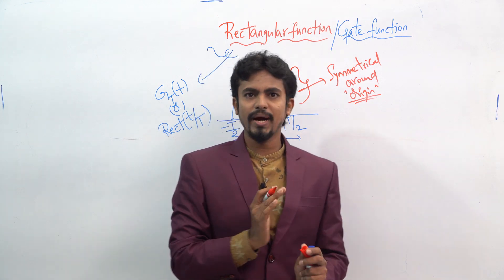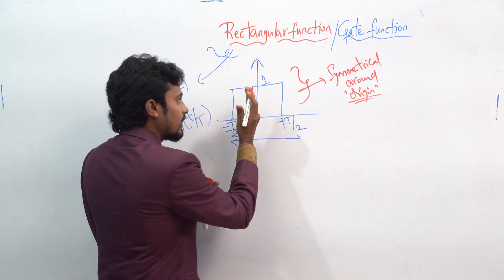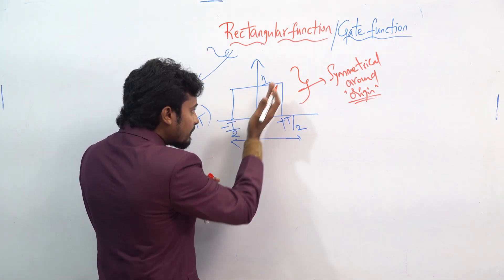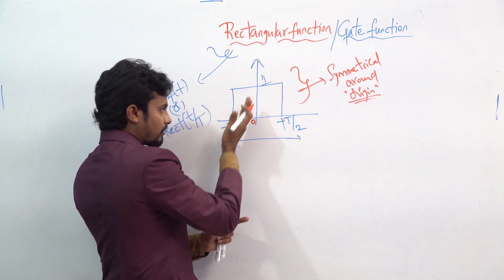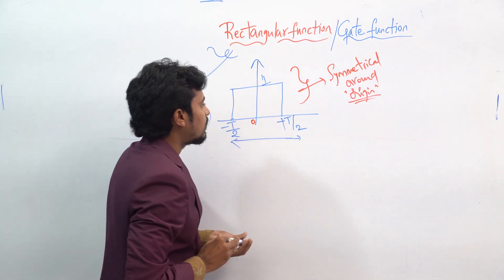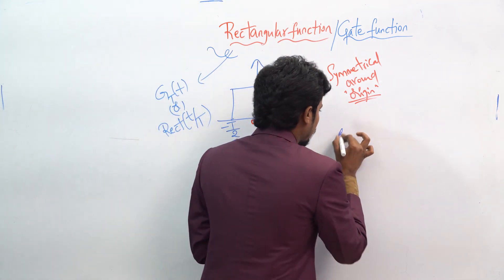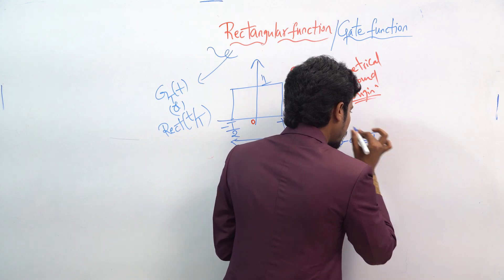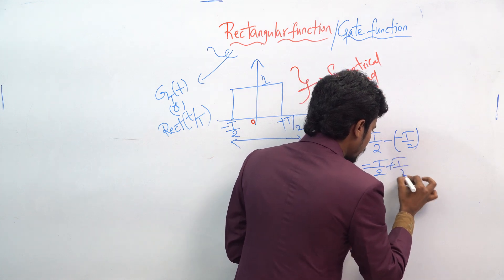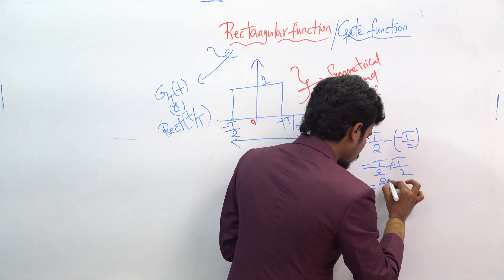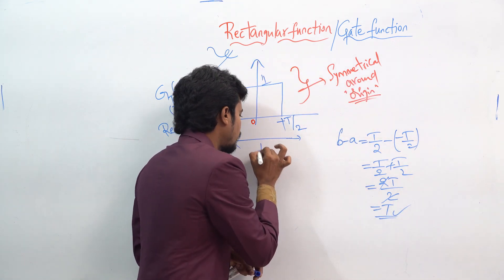That means the left-hand part is the same as the right-hand part. If you want to find the total width, that will be b minus a, which is T by 2 minus of minus T by 2, equal to T by 2 plus T by 2, which gives 2T divided by 2. So the total width is T.